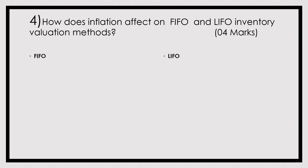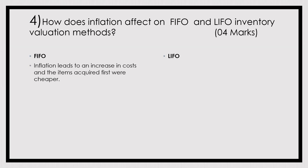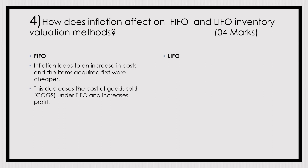How does inflation affect FIFO and LIFO inventory valuation methods? Gradual increase in price is known as inflation; gradual decrease in price is known as deflation. Under FIFO, inflation leads to increasing costs, and items acquired first are cheaper. This decreases the cost of goods sold under FIFO. At the same time, it increases profit. If profits are higher, the income tax figure is larger, and the value of unsold inventory — the closing inventory — is higher under FIFO in an inflationary scenario.